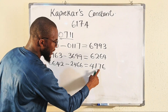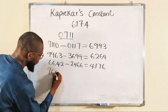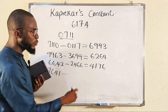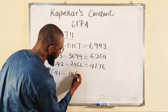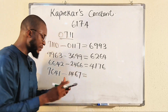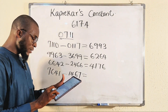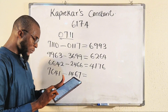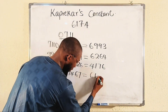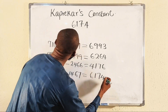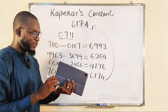The biggest number we get from 4176 is 7641. Minus the smallest one, which is 1467. Let's take the difference: 7641 minus 1467. We have 6174. Exactly! You can see they are exactly the same. This is true — we obtained Kaprekar's Constant.